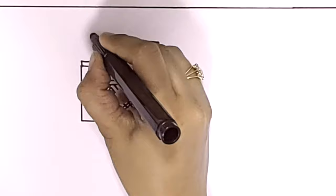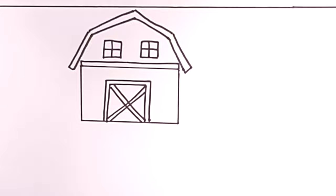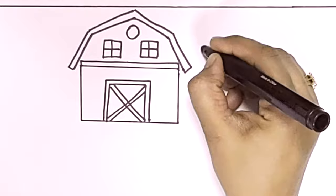Over the windows I'm going to draw the roof of the barn in a typical shape, which is a distorted triangle. If you find it difficult, you can simply draw a triangular roof as well.